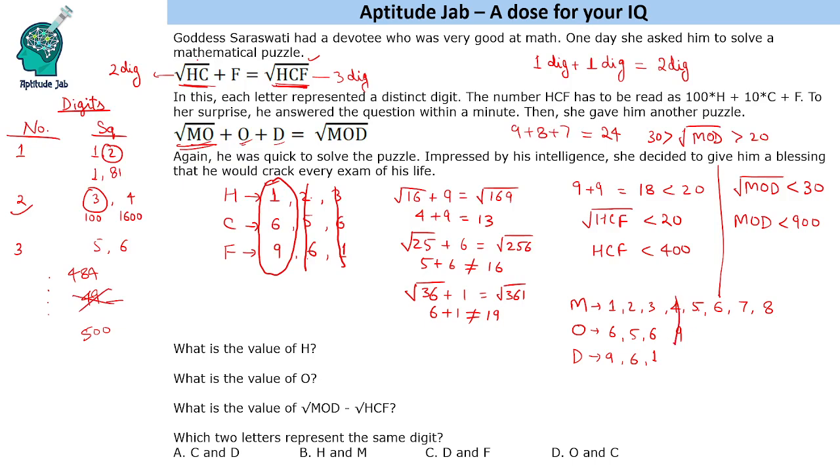Two digit square with 5 does not exist, so we cannot have MO as a root number. So this does not exist. If we take 64, is there any square? So 25 square is 625 and 26 square is 676. So we do not have any square starting with 6 and 4. So this also gets eliminated. We do not have any square number starting with 7.